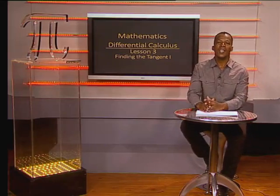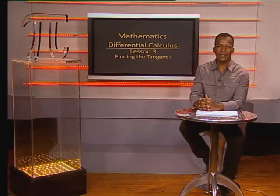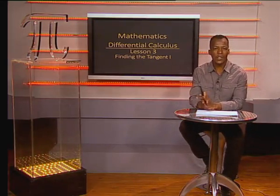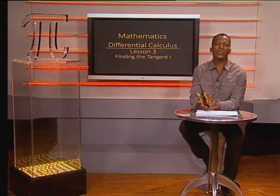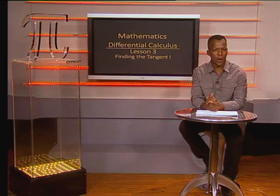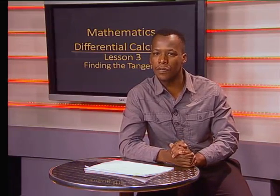Hello, grade 12s. Today we will learn how to find the gradient of the tangent to a curve. Remember, a tangent to a curve is a straight line that touches the curve at a point. And we also must remember that to find the gradient of a straight line, we need two points on the line. Keep these points in mind as we join Donovan and MacGyver, who will take us through the steps to find the gradient of a tangent to a curve.